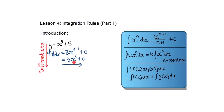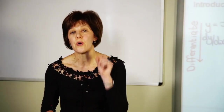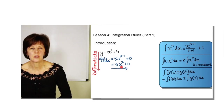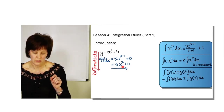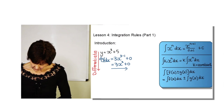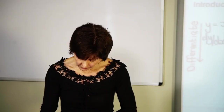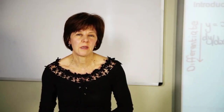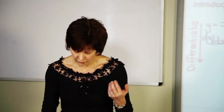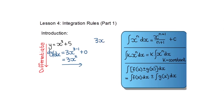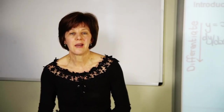Now, if the answer of differentiation is 3x², what did I start off with? Let's write this as 3x² plus nothing, because 0 is nothing. So if the answer of differentiation is 3x² and I want to know what I started off with, in order to do this I'm going to integrate.